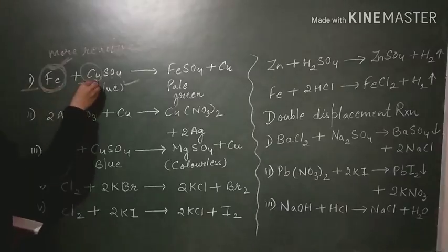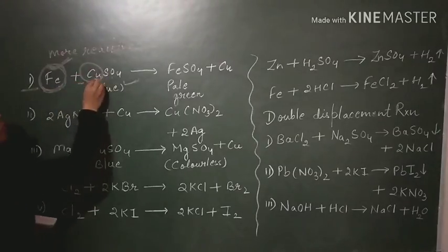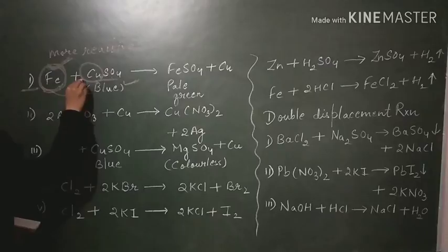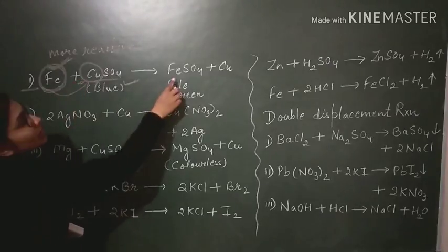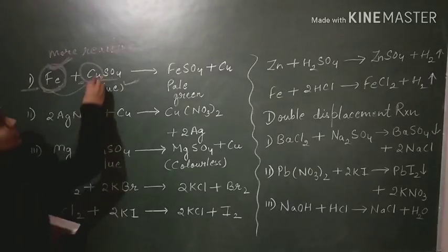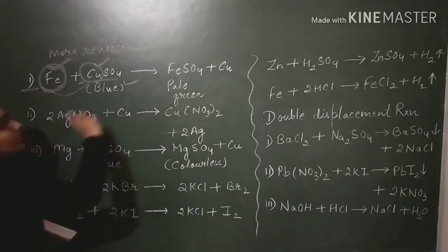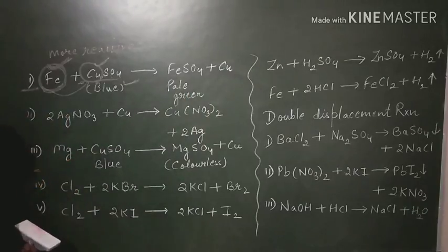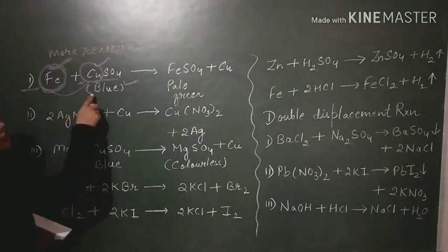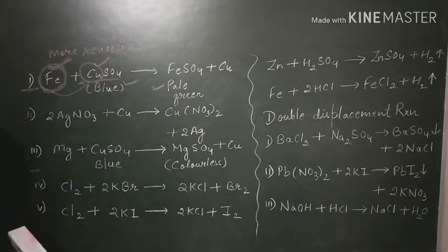Here iron is more reactive and copper is less reactive. So from copper sulfate, iron will displace copper and form ferrous sulfate. The solution will change from blue to pale grey. This is one example of displacement reaction.